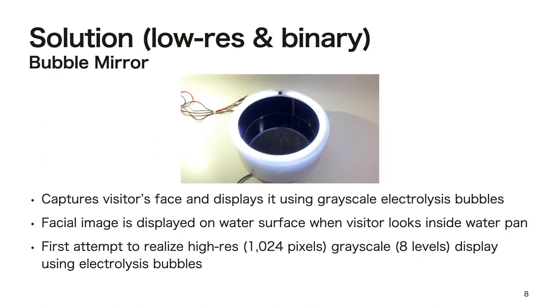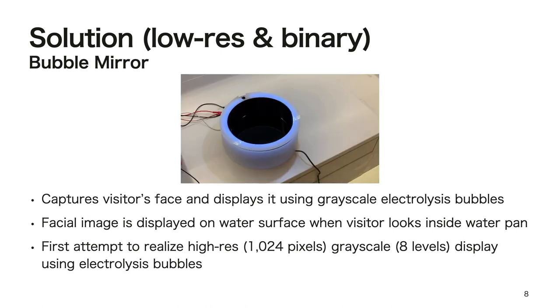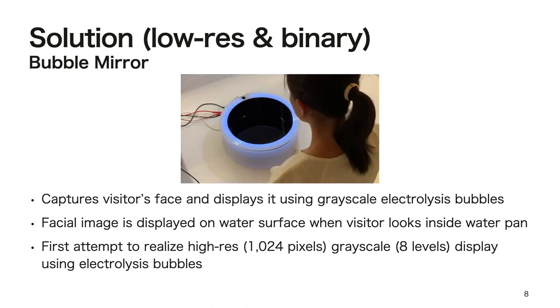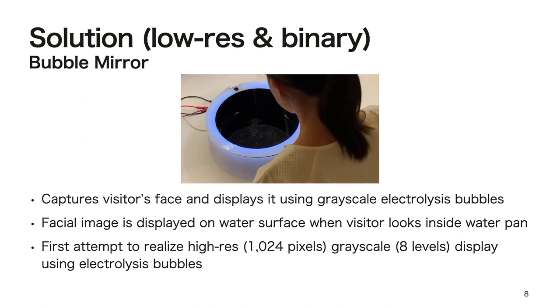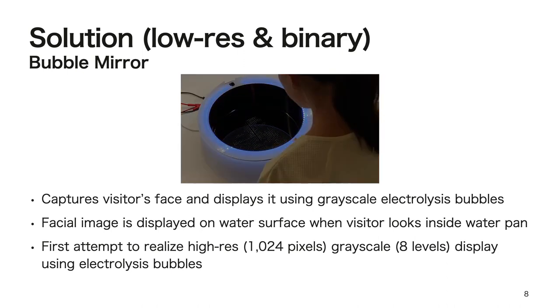To improve the second challenge of low resolution and binary display, we propose Bubble Mirror. Bubble Mirror is a water pan with a camera that captures a visitor's face and displays it using grayscale pixels of bubble clusters generated from electrolysis. A facial image is displayed on the water surface when a visitor looks inside the water pan.